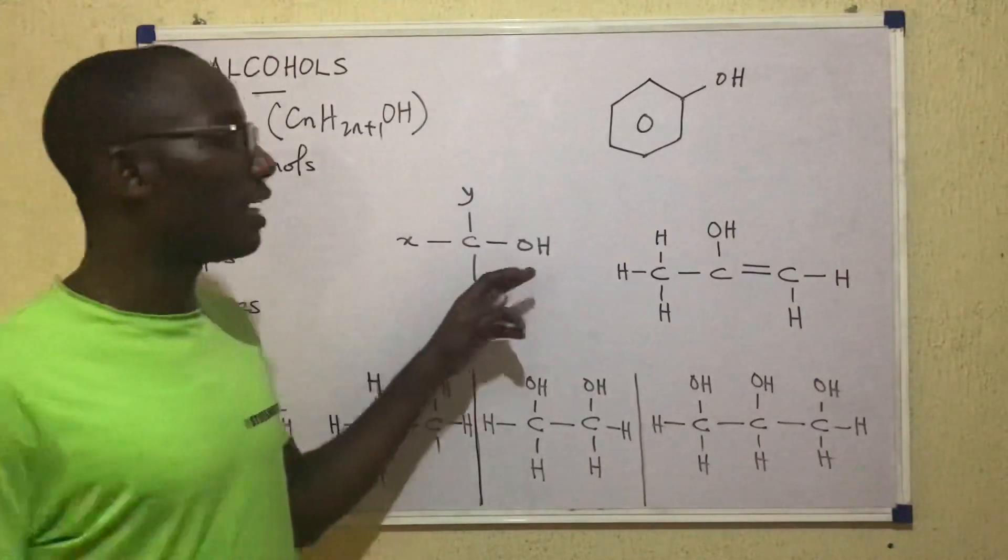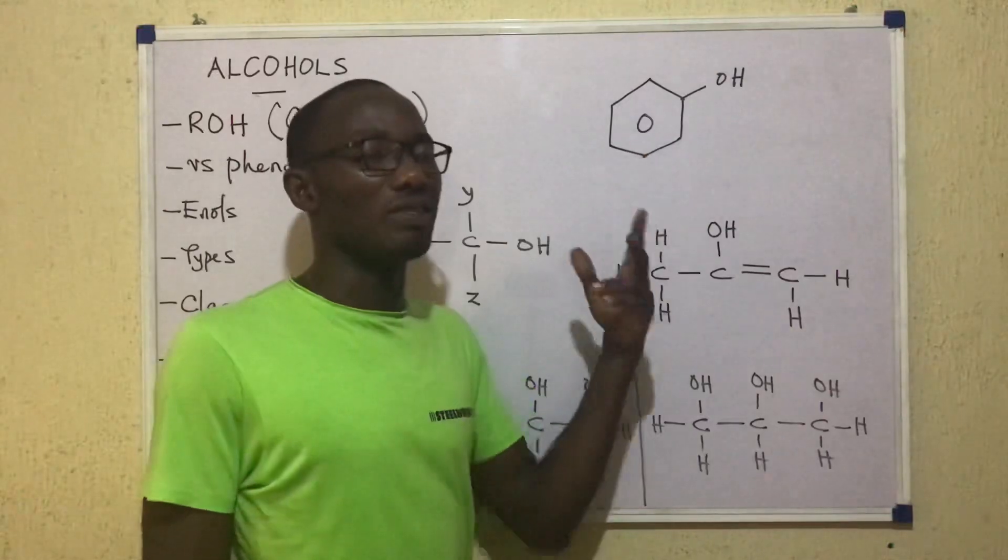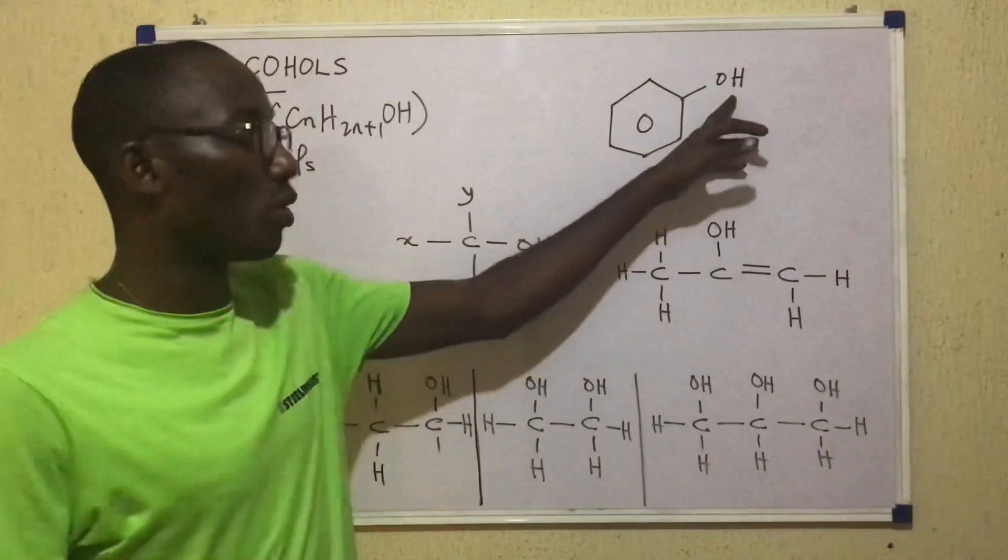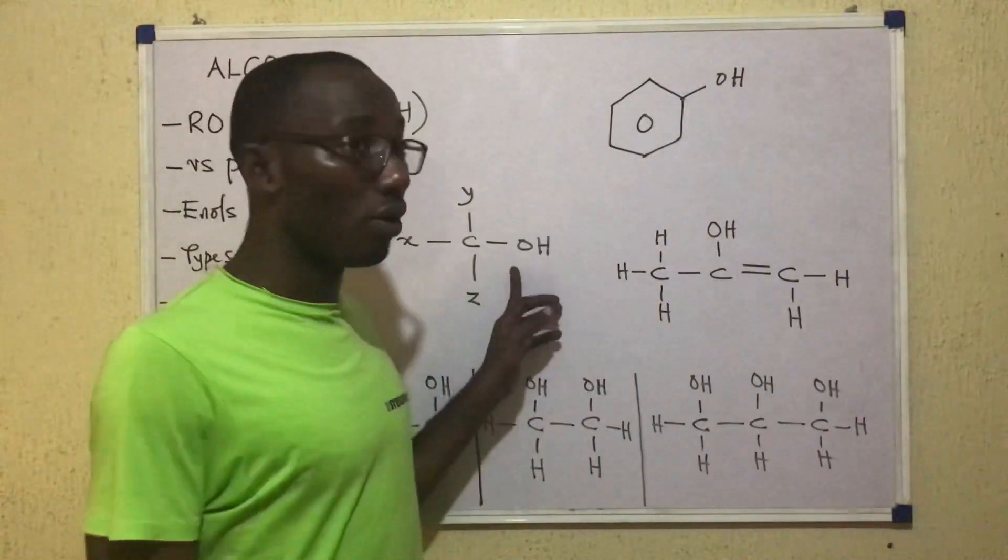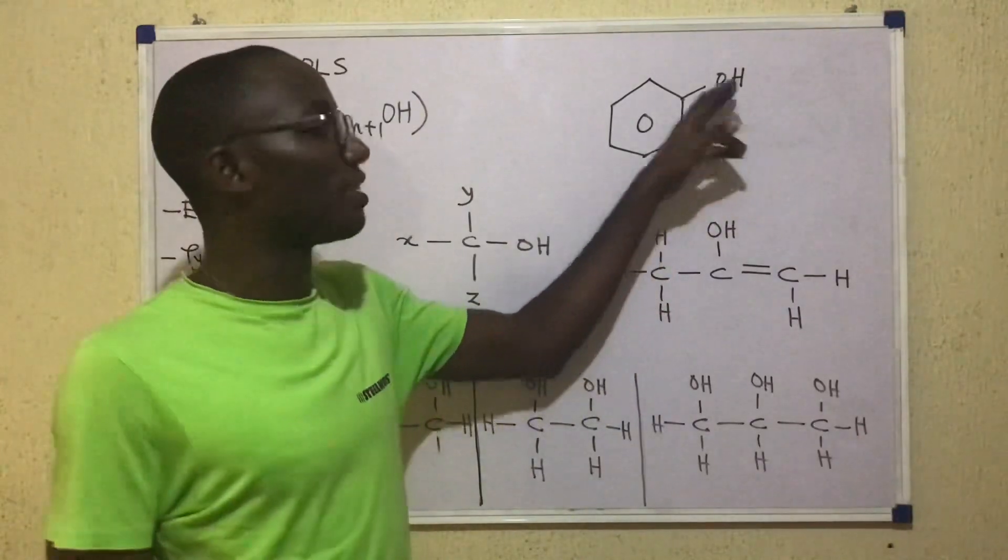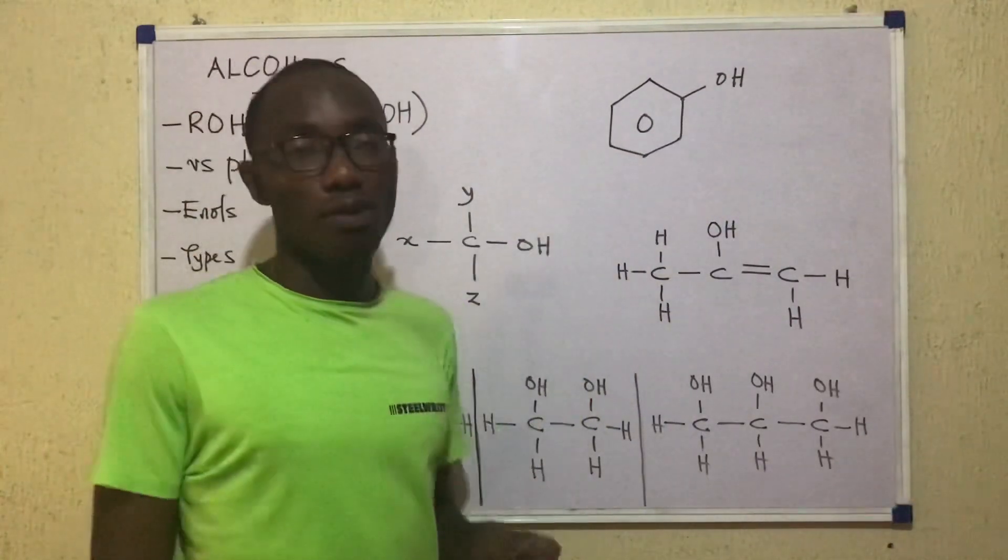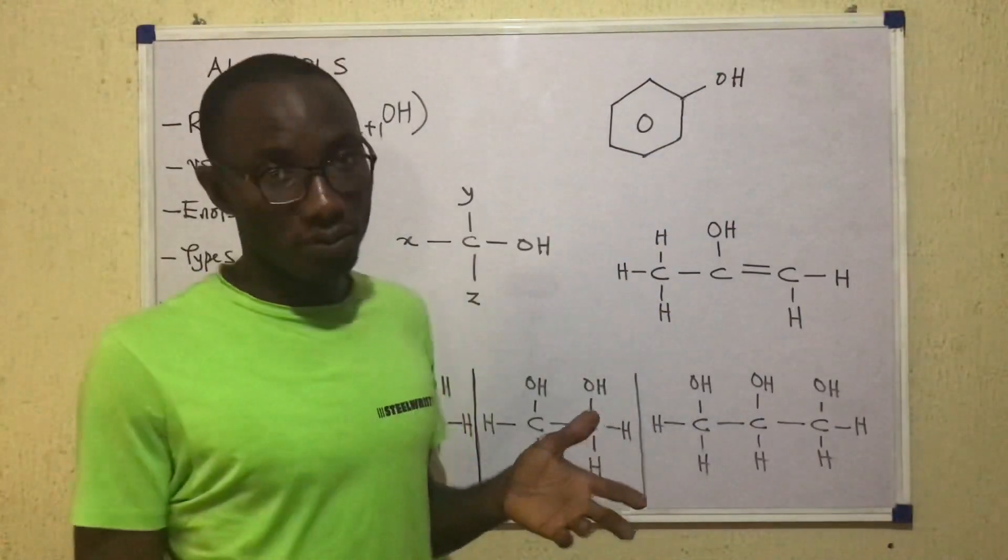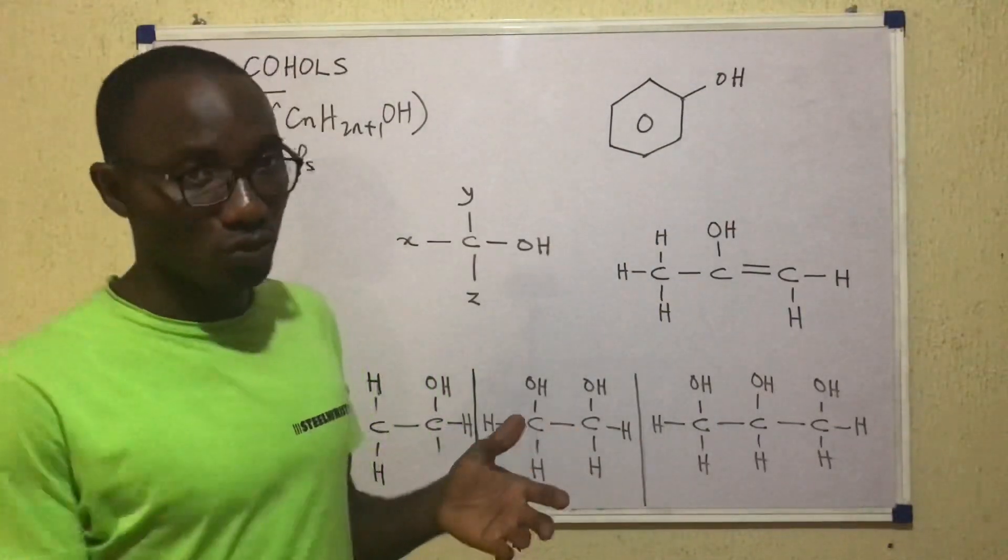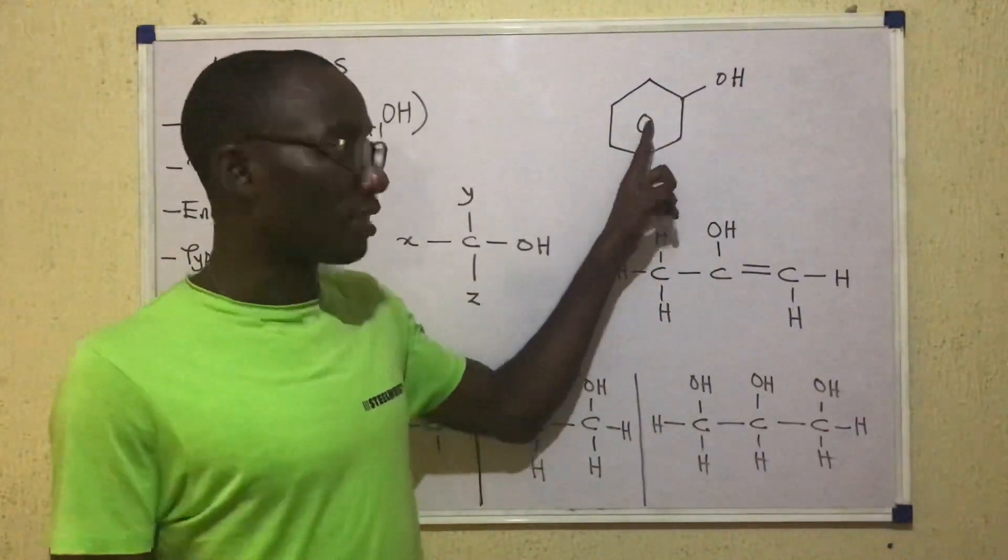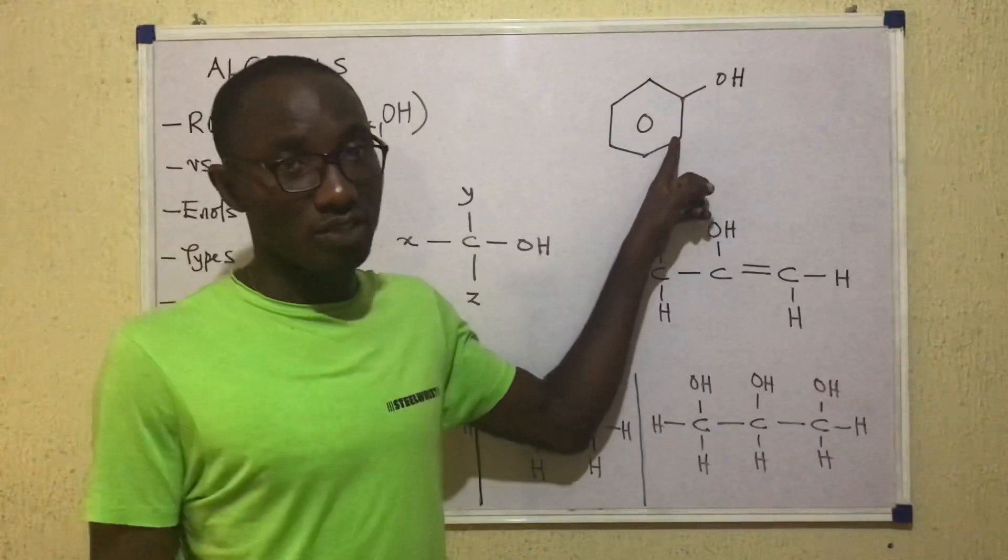On the other hand, we have a group of compounds that resemble the alcohols but are not alcohols. They also have the OH or hydroxyl group just like the alcohols, but in their case the OH group is attached to an aromatic ring. When we have such compounds we call them phenols. And of all the different phenols we know, there is phenol itself. This is phenol itself. It has the OH attached to a benzene ring.